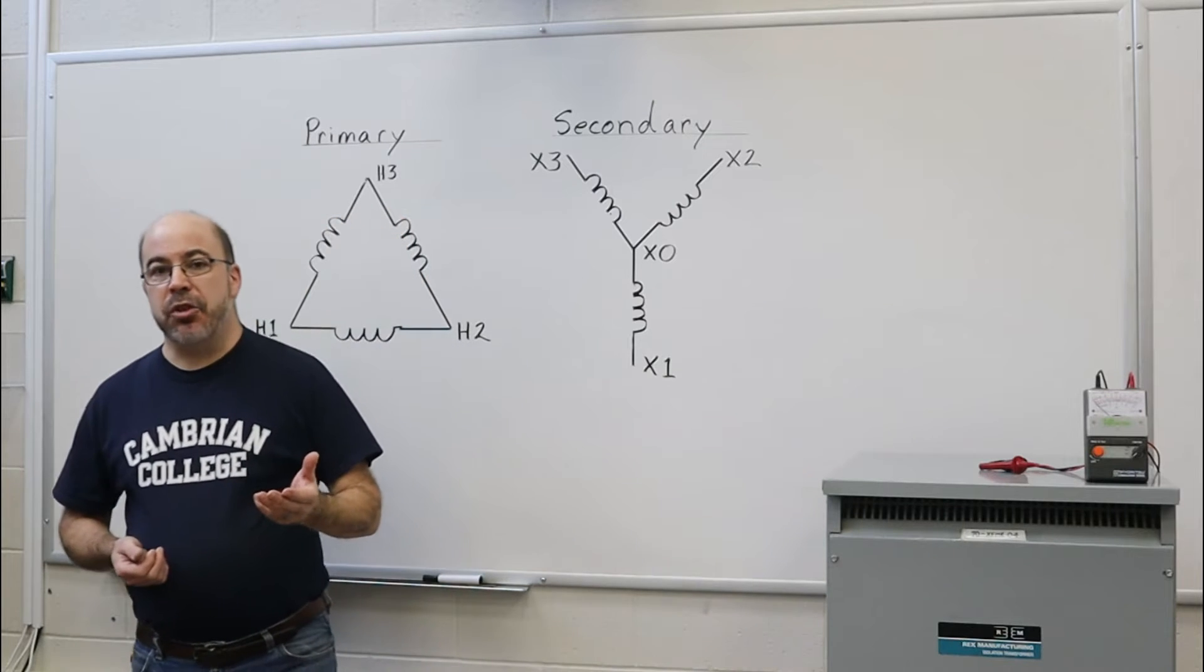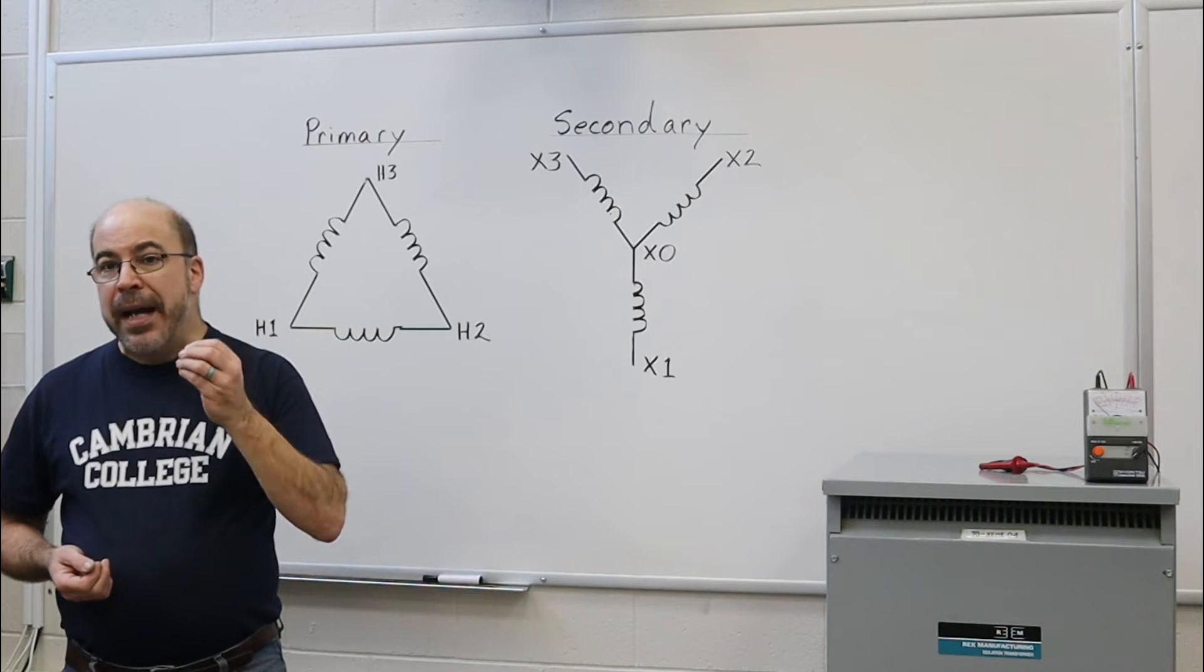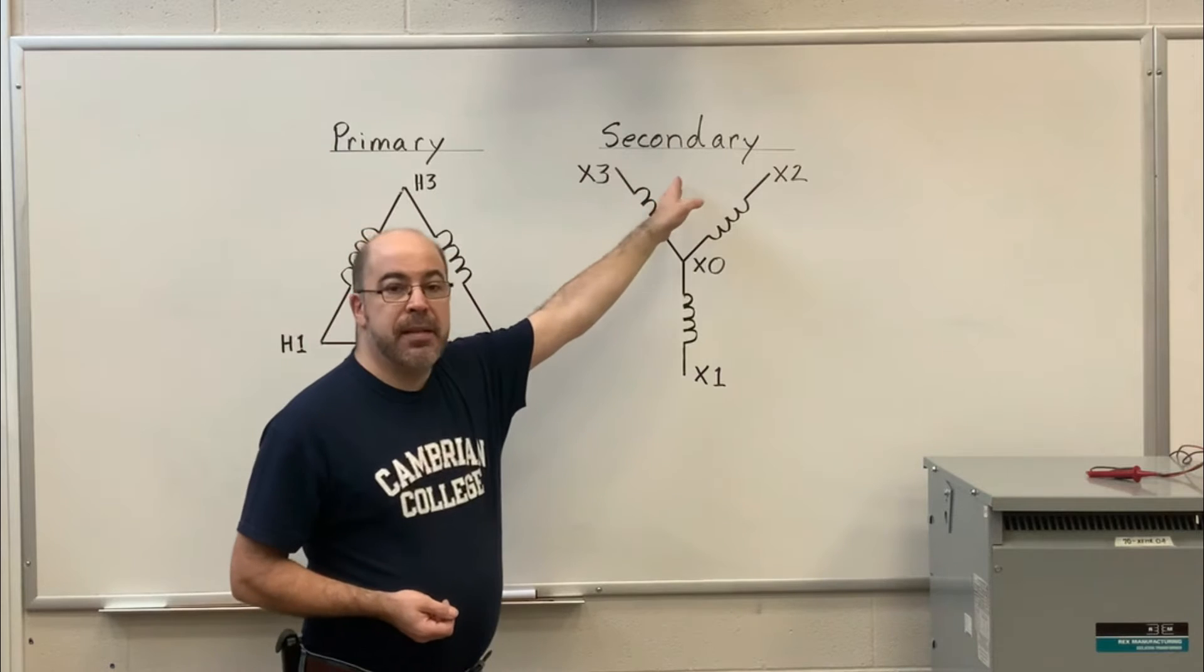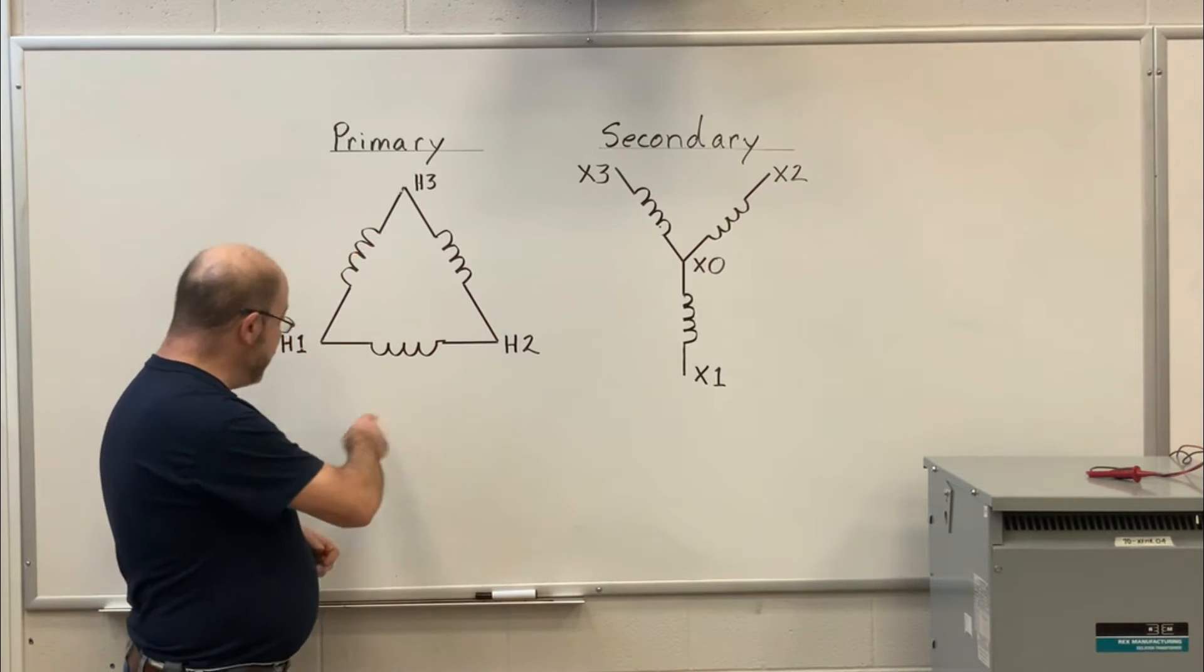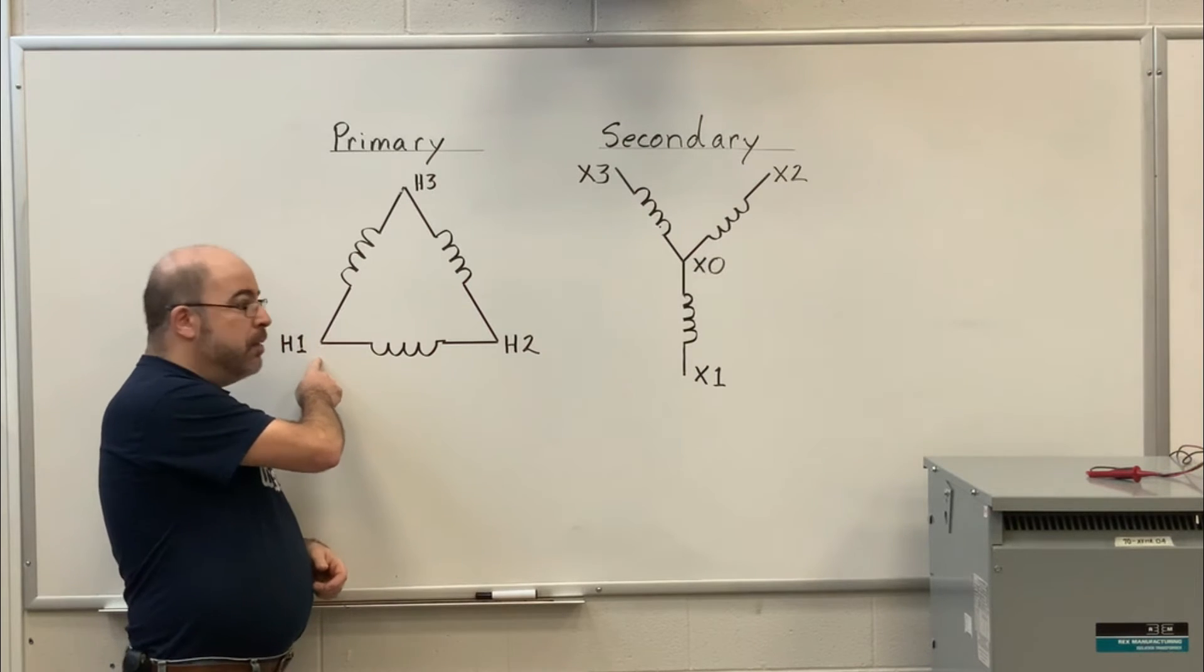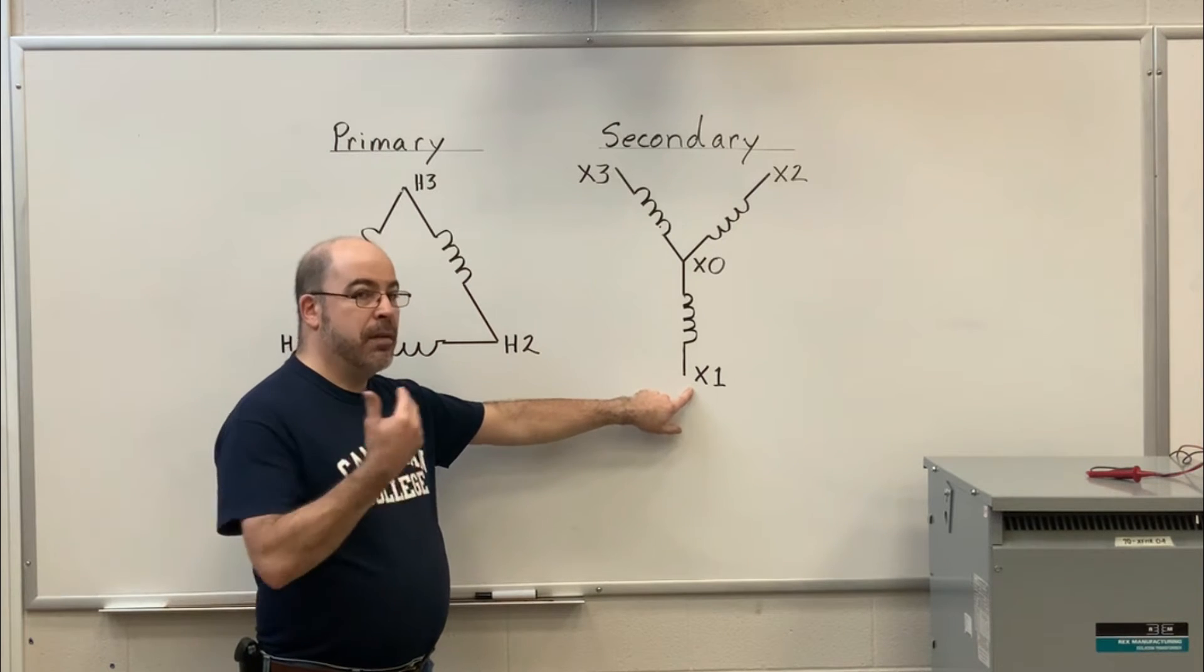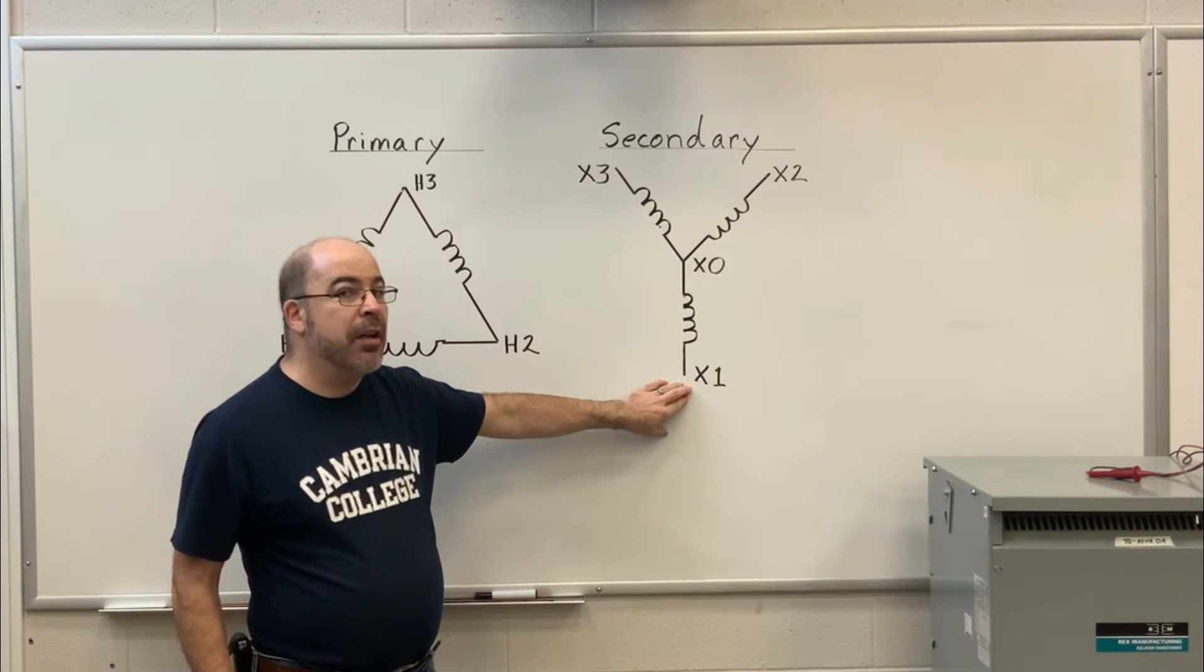The second part of the procedure is I want to check to make sure that the windings are electrically isolated from one another, from the primary to the secondary. And simply said, I'm going to take one side of my megohmmeter, place it on H1, and then I'm going to test to X1 because it's part of the primary and secondary winding. And I should not see continuity.